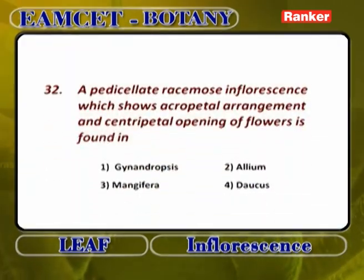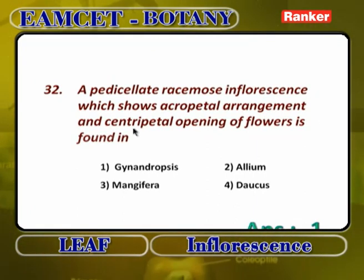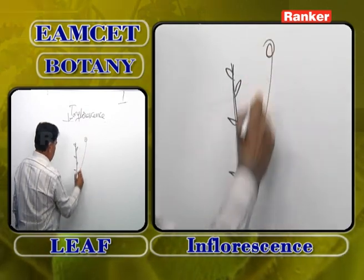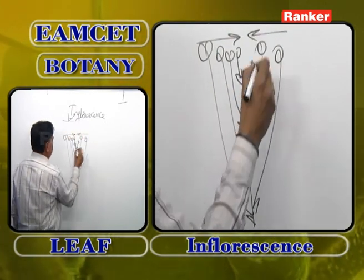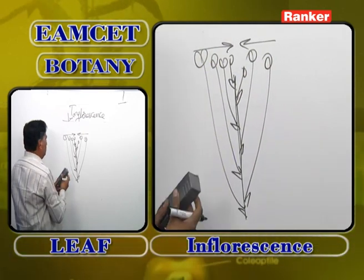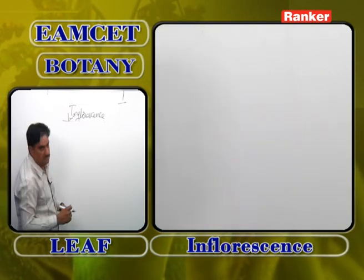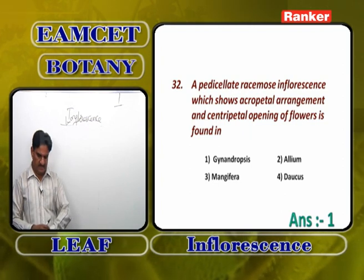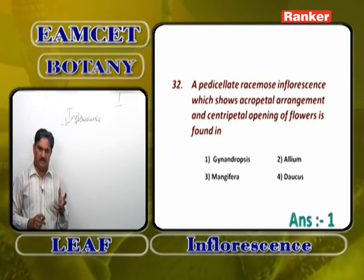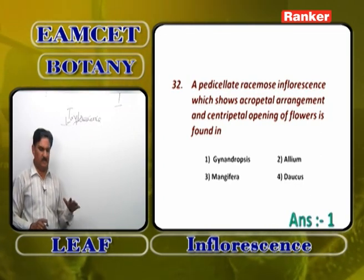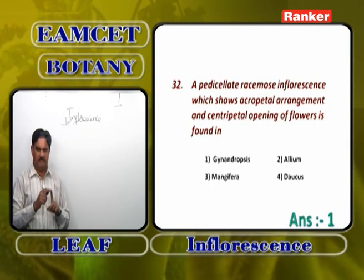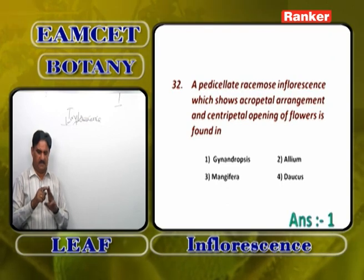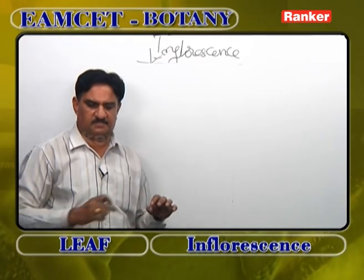A pedicellate racemose inflorescence showing acropetal arrangement and centripetal opening of flowers is found in gynandropsis. In gynandropsis, the peduncle grows indefinitely, flowers are arranged in acropetal succession, lower flowers show long pedicels and upper flowers show short pedicels, so all flowers are at the same height — centripetal opening. Gynandropsis shows all three basic characters of racemose inflorescence: indefinite peduncle growth, acropetal succession, and centripetal opening.